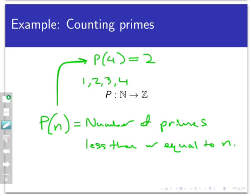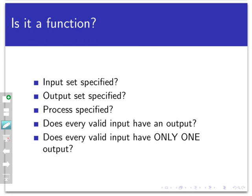Now let's ask the six questions we ask of all our processes, starting with: is that process really a function? Well, the input set is definitely specified — it's the set of all natural numbers, so no ambiguity there. The output set is specified as the set of all integers. Notice that I didn't specify the process at the very beginning; just specifying the input and output sets is not enough to define a function. To give a real function, I need to specify the process, and we just did that in words.